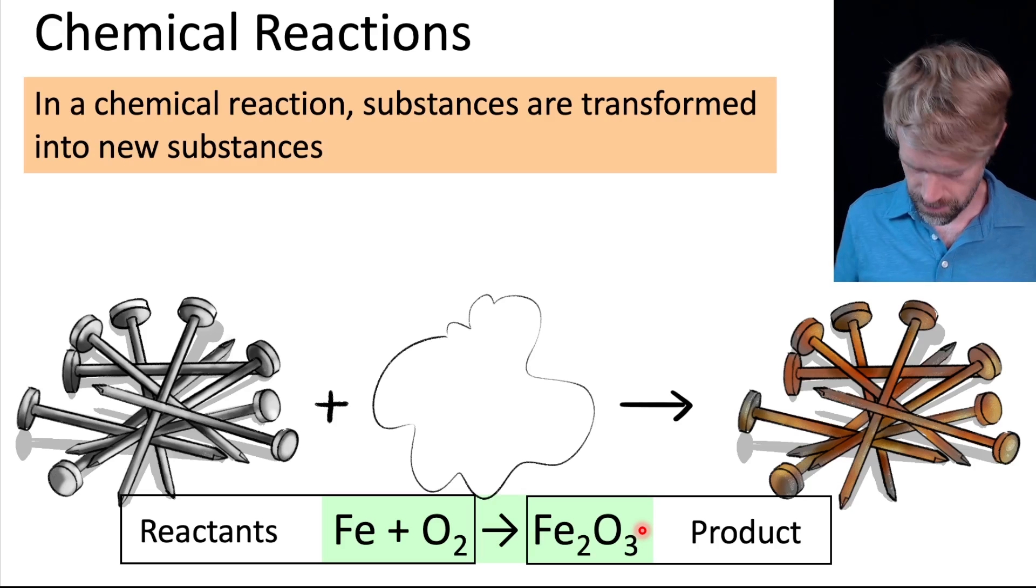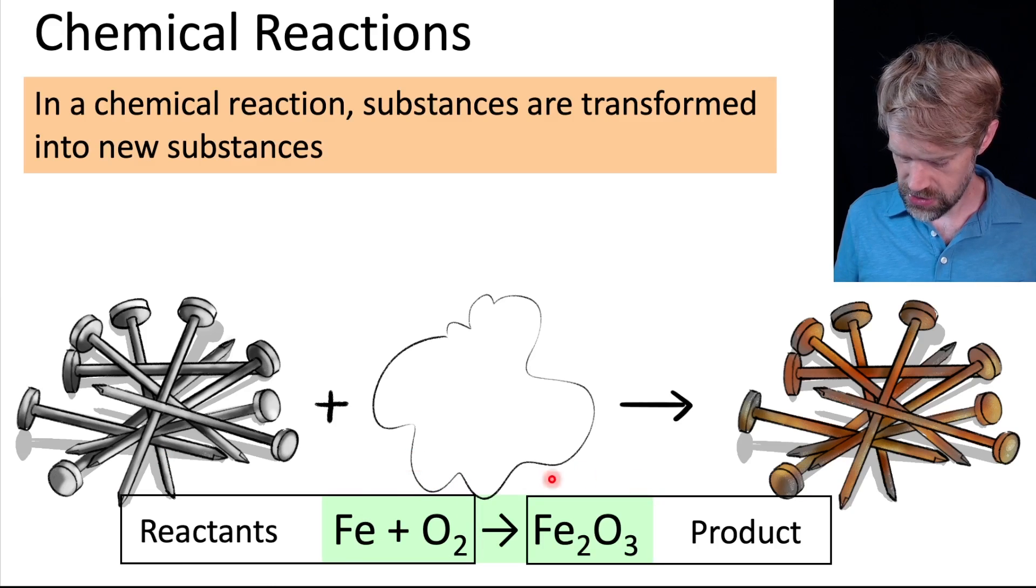What are the reactants? Iron and oxygen gas, that's what we start with. And rust, Fe2O3 is the product.